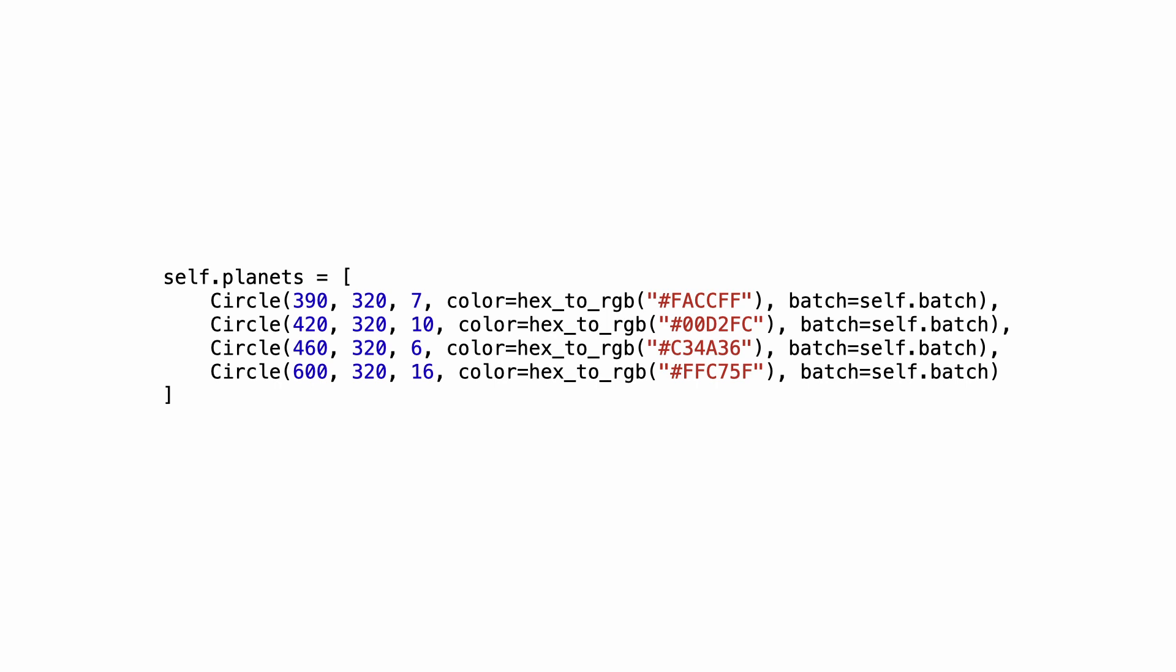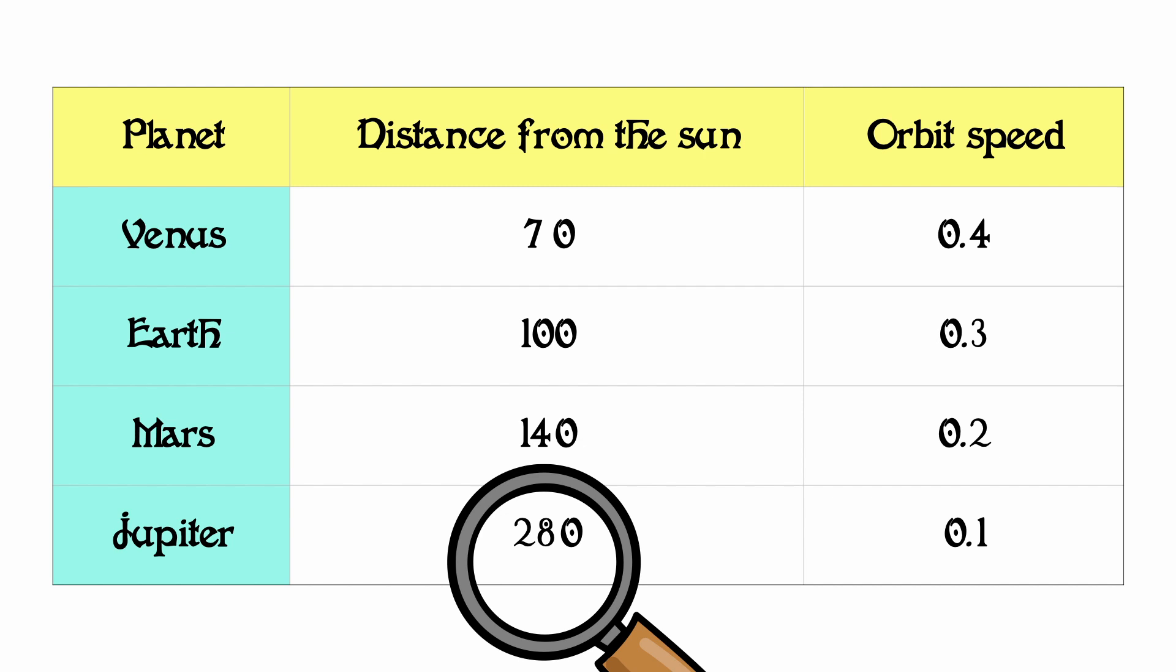Planets are stored in a list. Each planet has a radius and color. But to add motion, Leo needs to specify more information. Here are the planets distances from the sun and their orbit speeds. Leo will pack each circle in the planets list in a tuple that also has the distances and speeds.